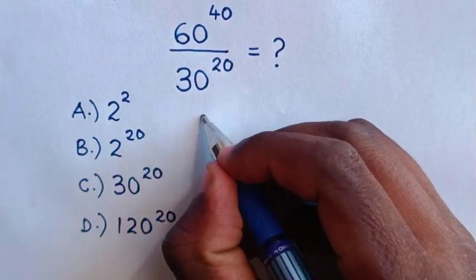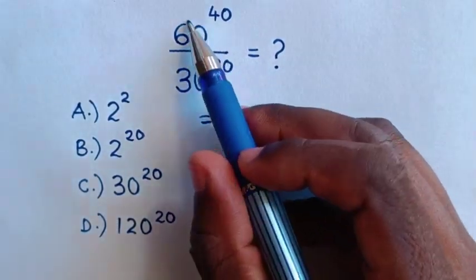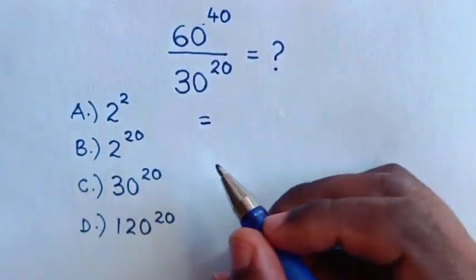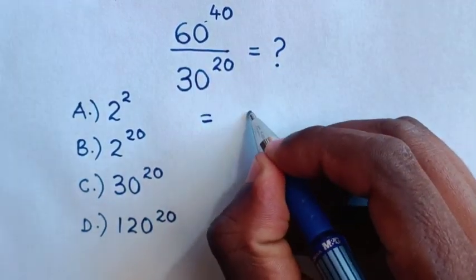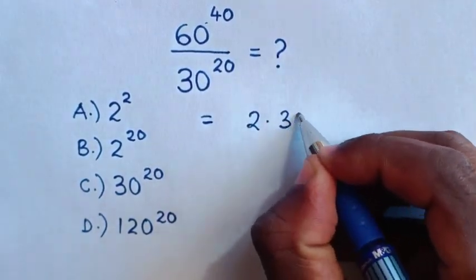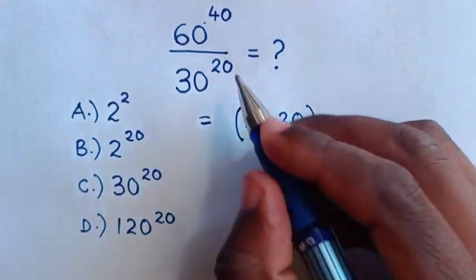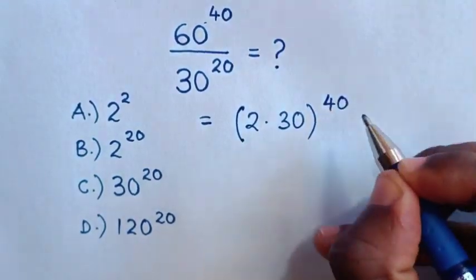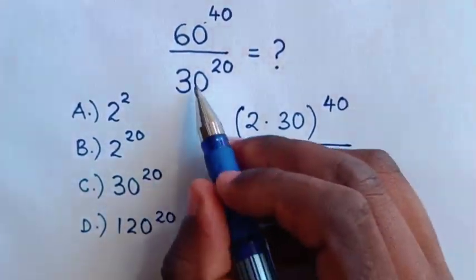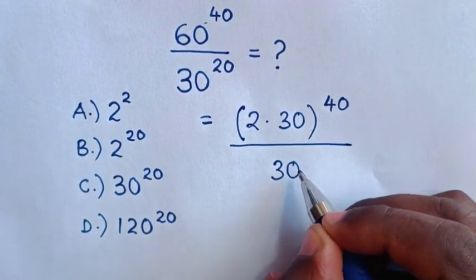So, this will be equal to, for this base of 60 to have common base of 30, 60 is same as 2 times 30, then bracket power of 40, then over 30 power of 20.